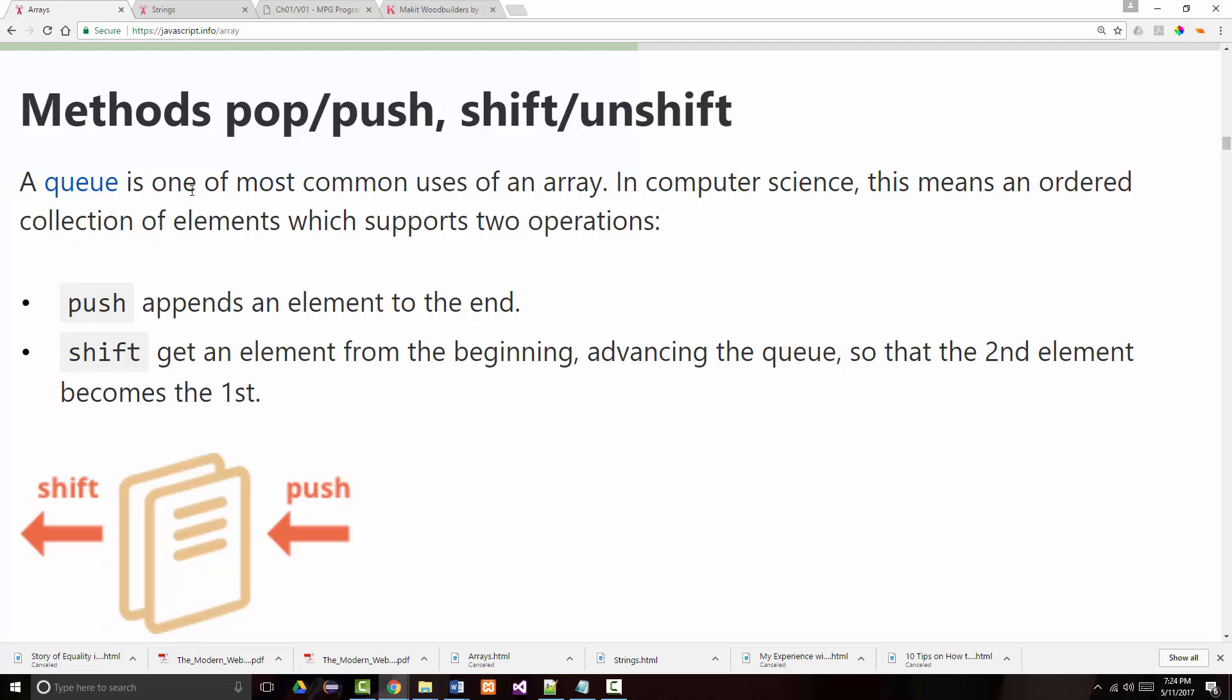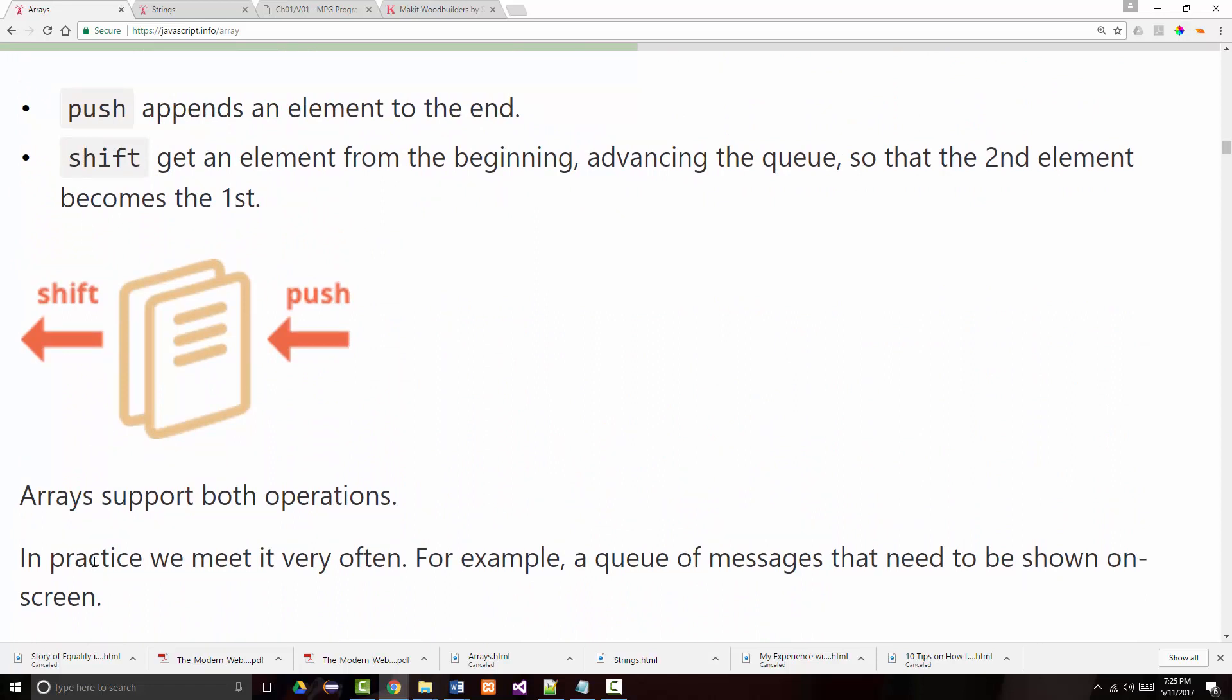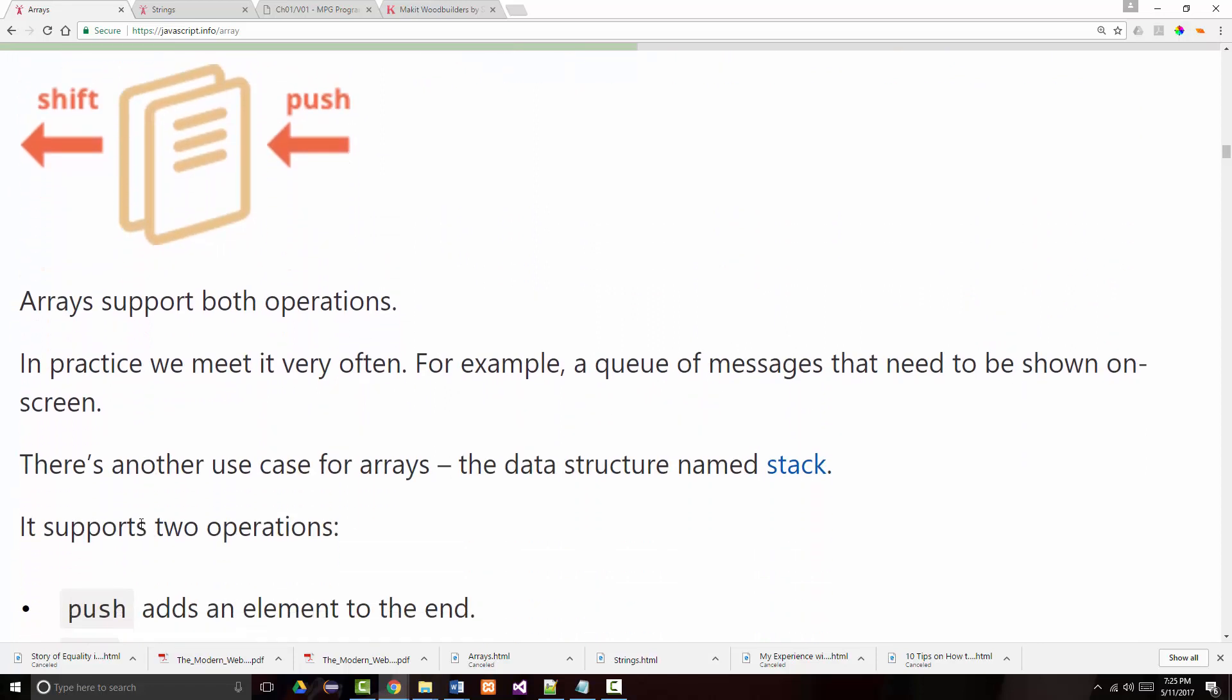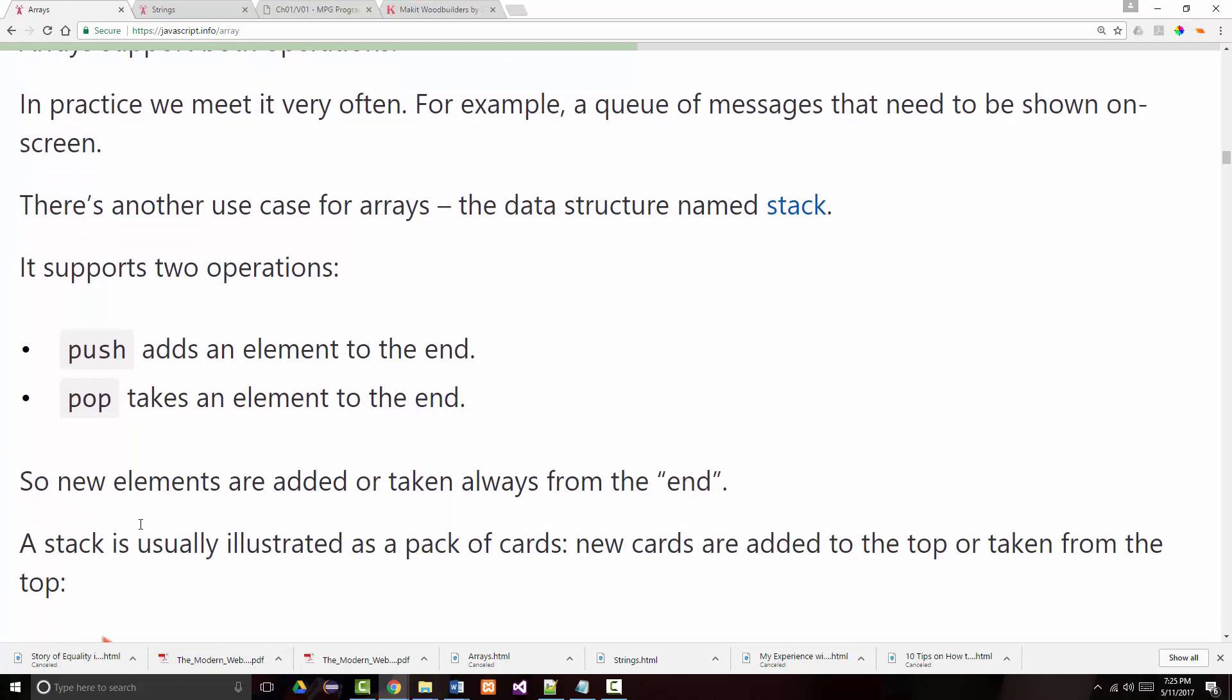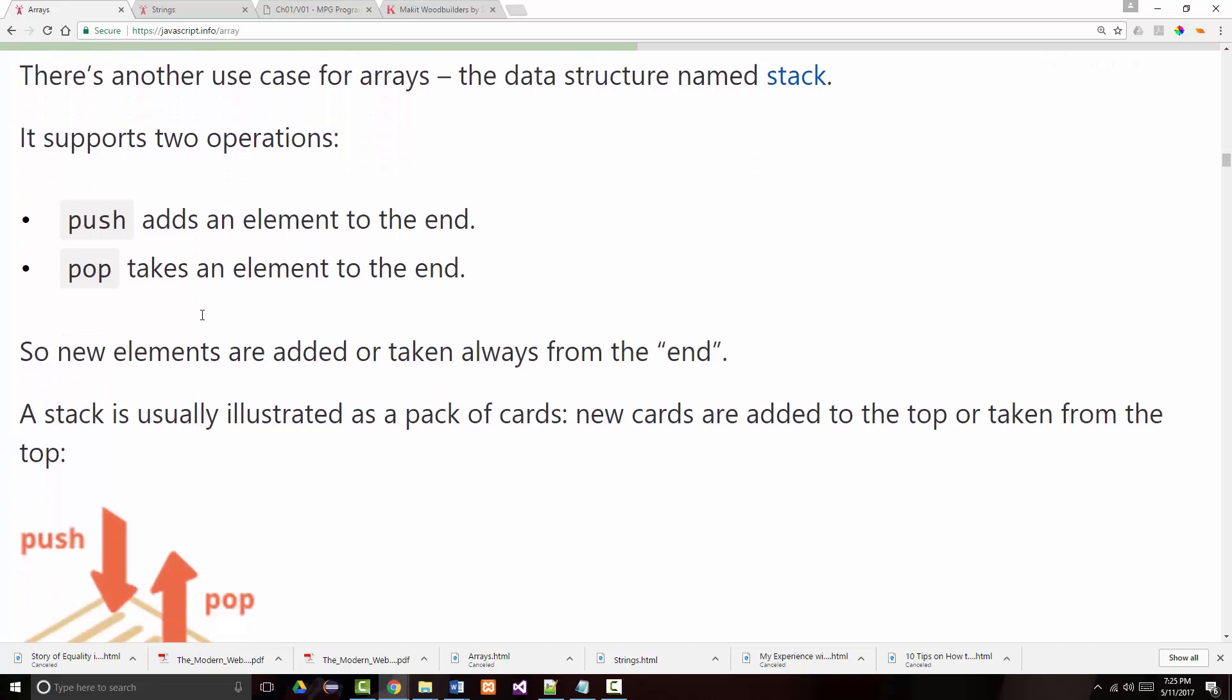So what does that have to do with anything? Well, as it says there, when you use a queue, typically you push things to the end of it. This would be like a person walking up and adding themselves to the line. Shift, on the other hand, this would be like the next person being served. So they'd be served, you'd shift them out of here, and you'd push, and the next person then would be served. Both push and shift are array operations, and they're both supported by JavaScript. In practice, we meet it very often - a queue of messages, and it gives some other examples.